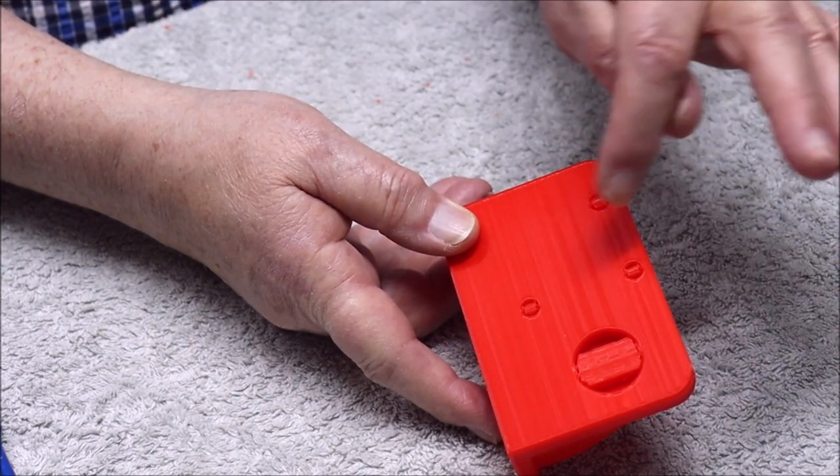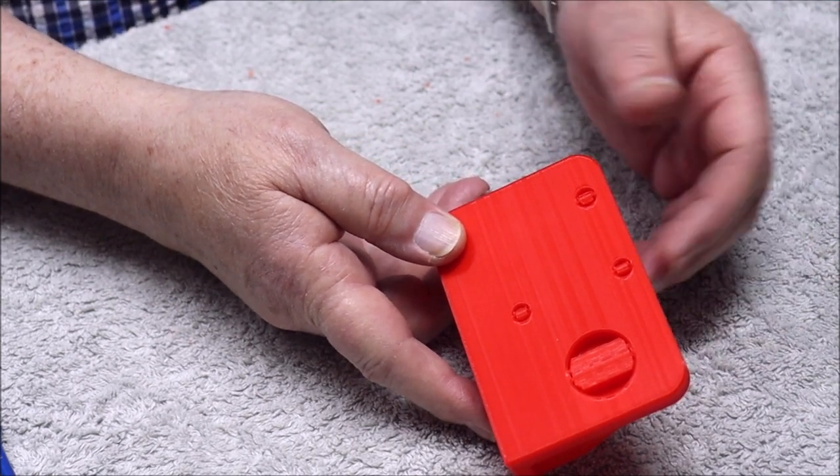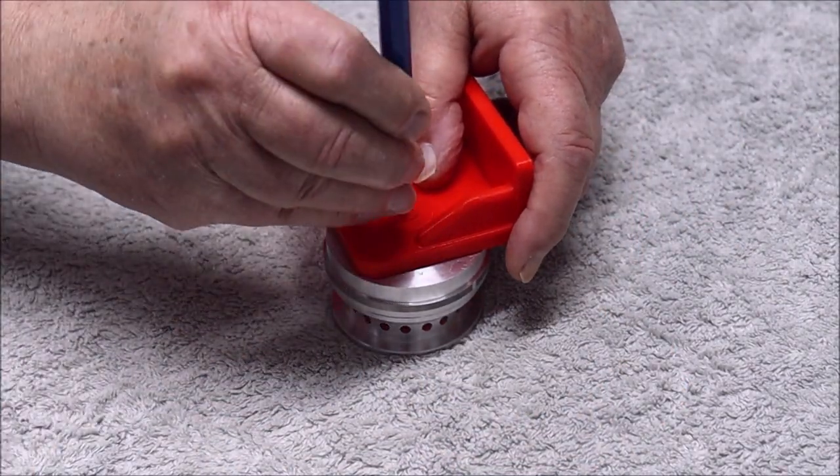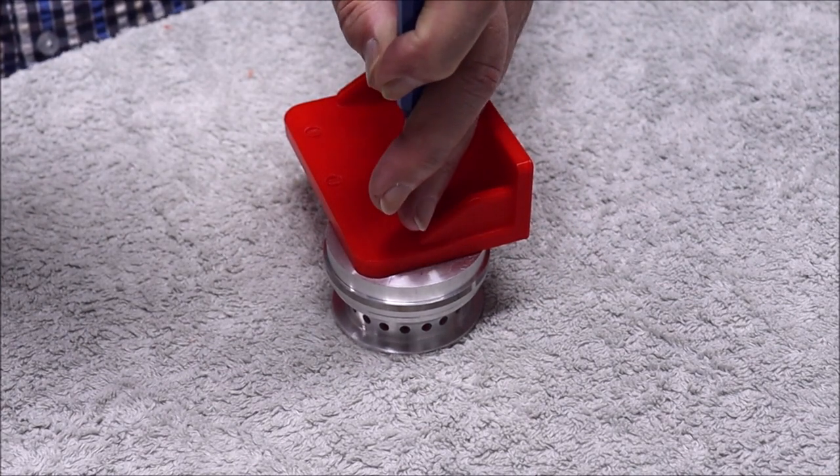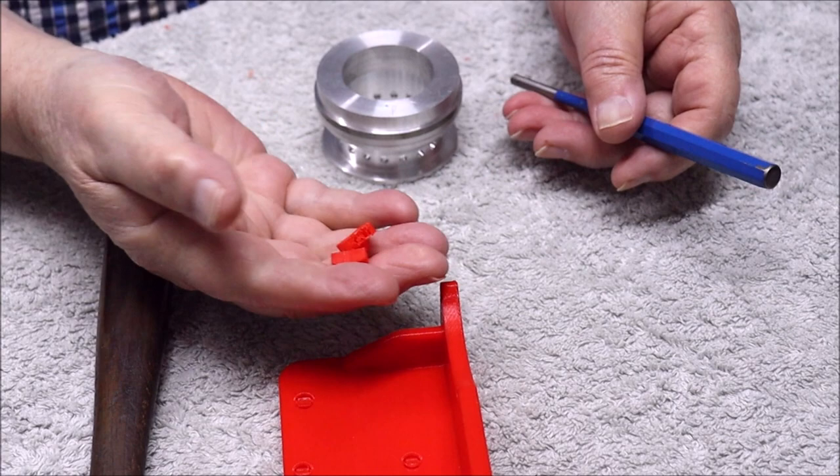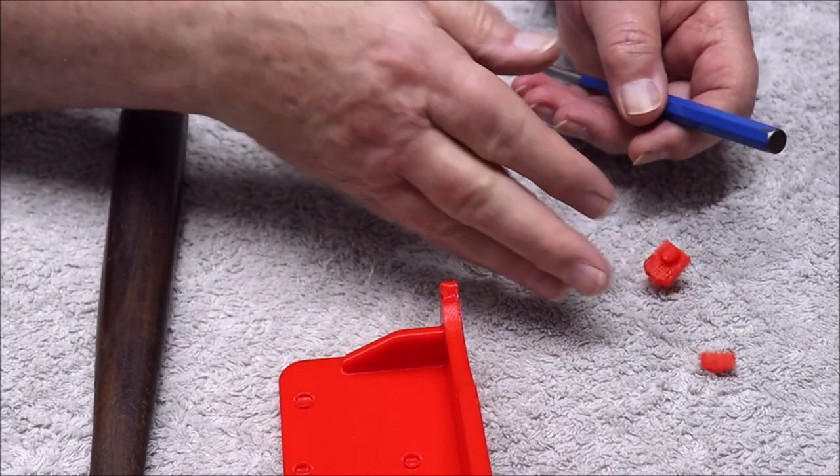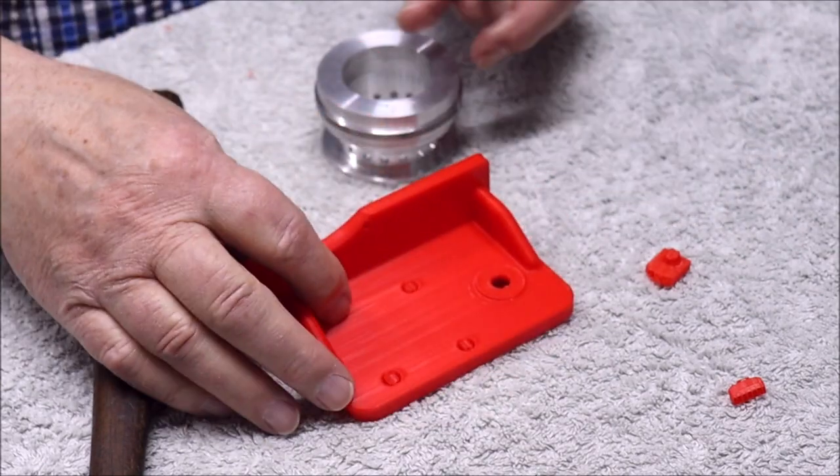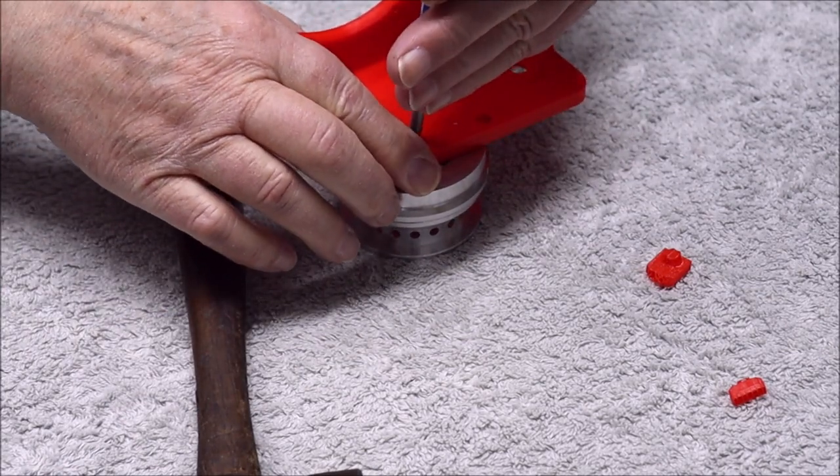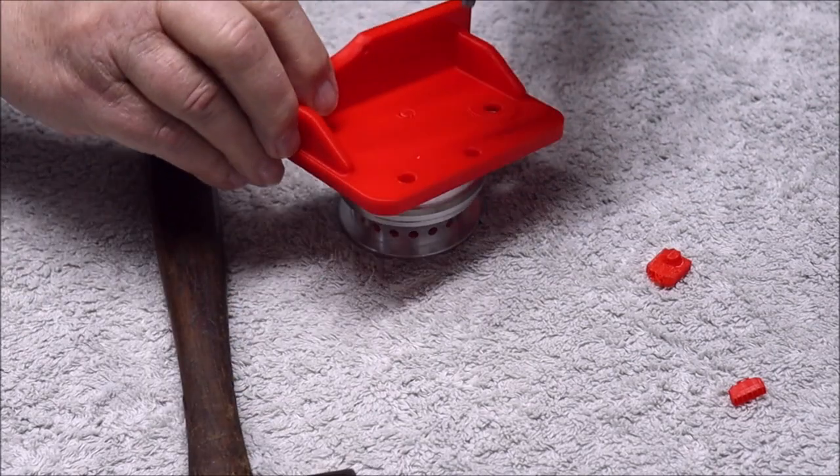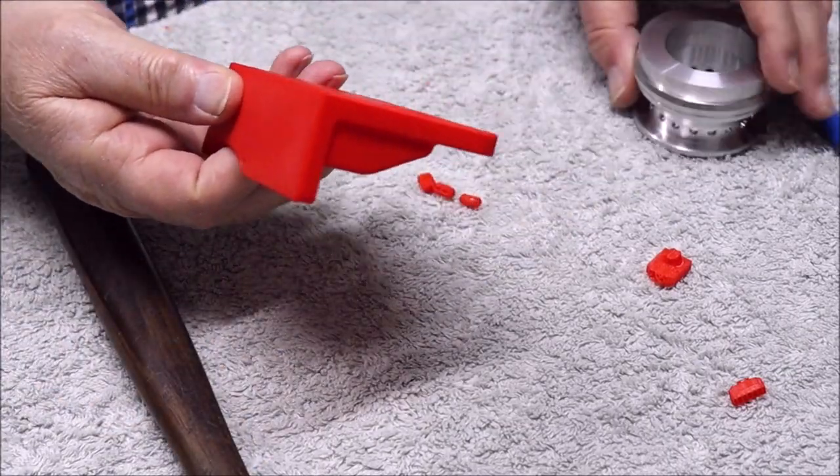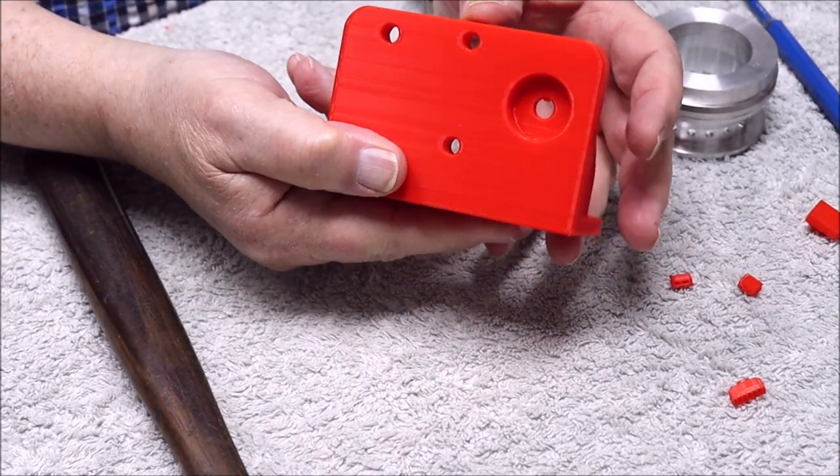And there you can see the supports that are within the holes to stop them collapsing when the 3D printer gets to the top of the holes. I'll just knock those out and we'll see what we end up with. So there's a couple of the bits that were supporting that hole while it was being created. Now I'll just knock the others out. There you go, there's the supports and there's the holes.